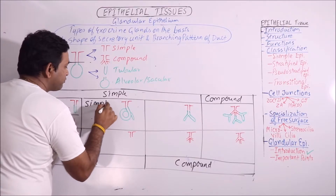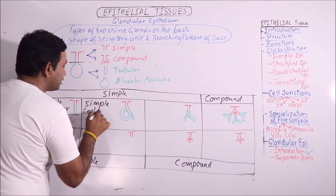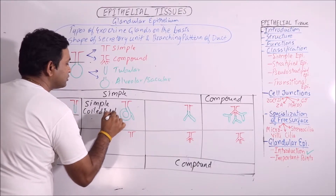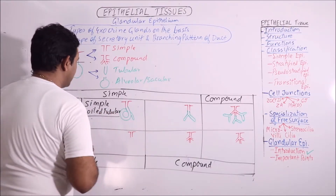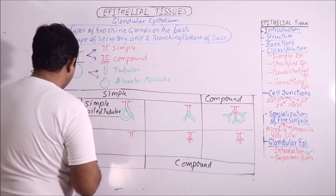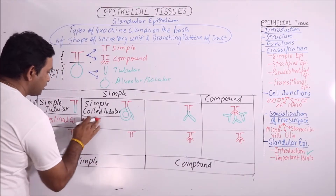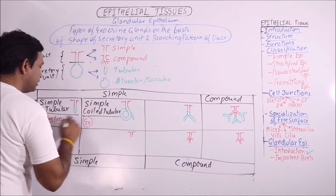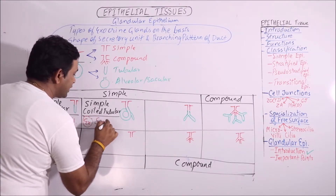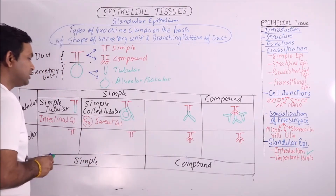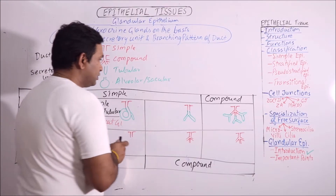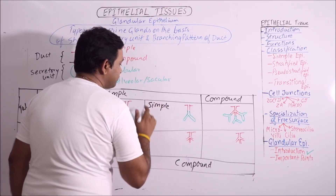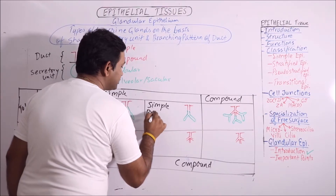The second type of gland will be simple coiled tubular, where the duct system is simple and the secretory unit is coiled tubular. Such a type of gland is found in sweat glands, which are of the coiled tubular type.